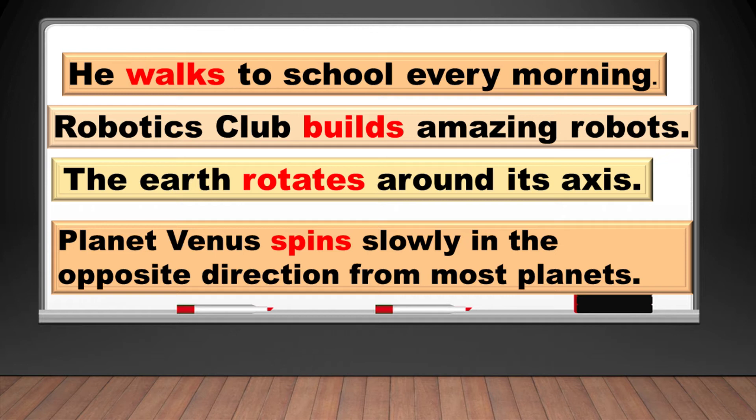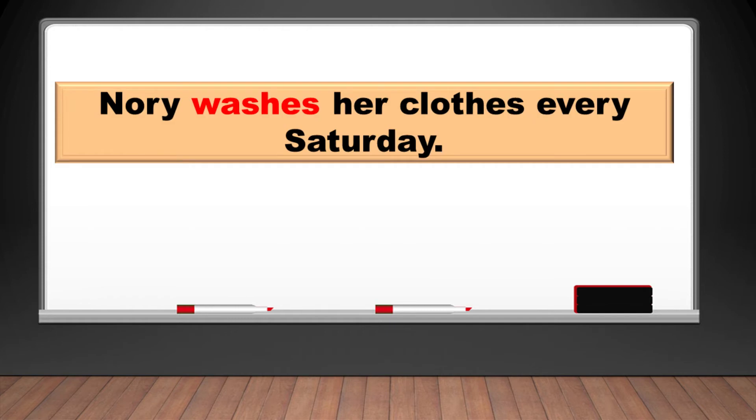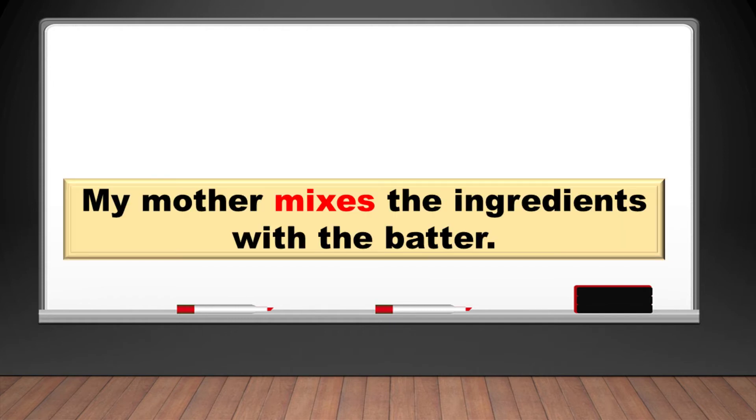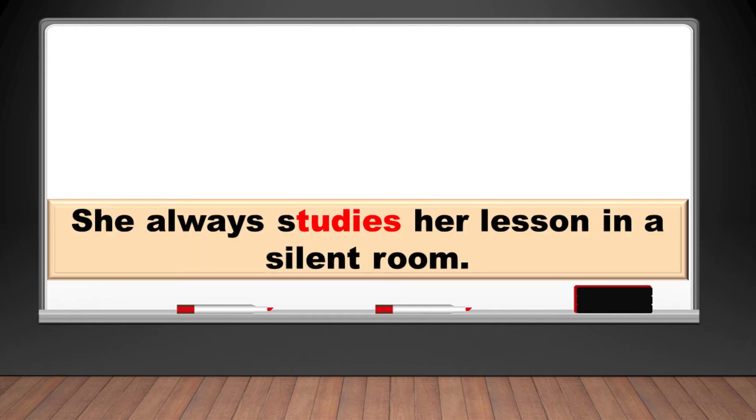Here are also examples of verbs with es at the end. The angel watches over us all the time. The contestant guesses the answer correctly. Nori washes her clothes every Saturday. My mother mixes the ingredients with the batter. Mikey goes to the market daily. She always studies her lesson in a silent room.